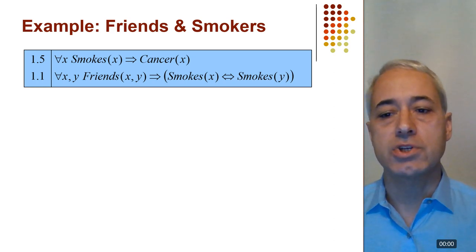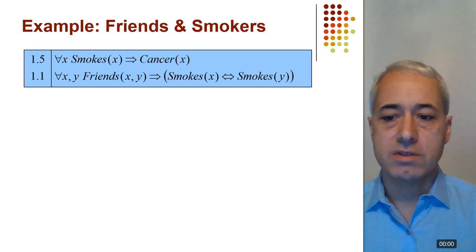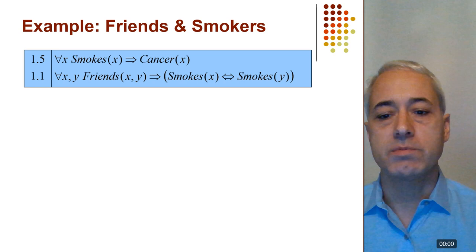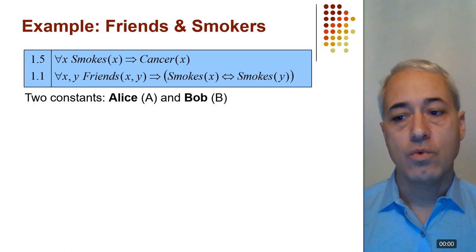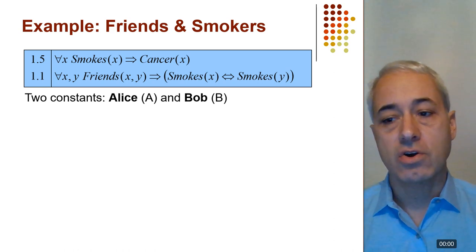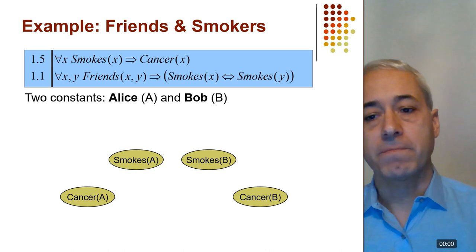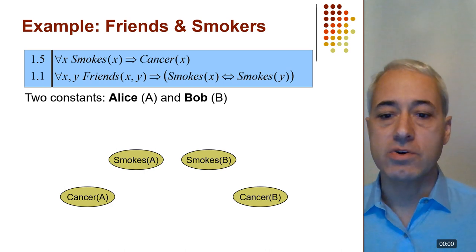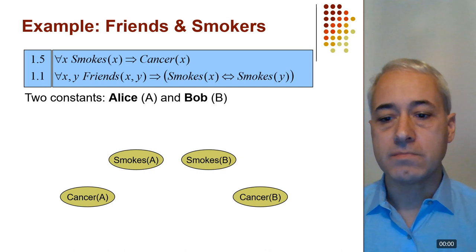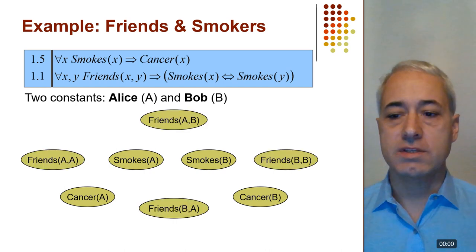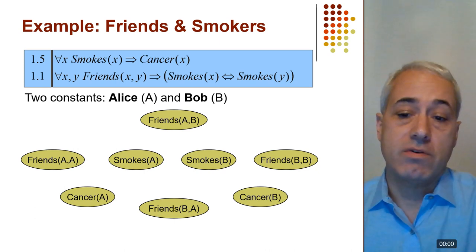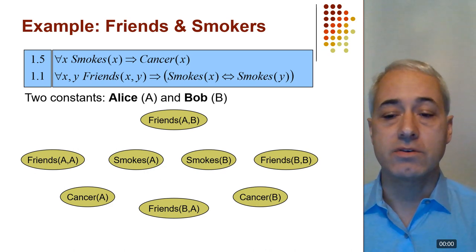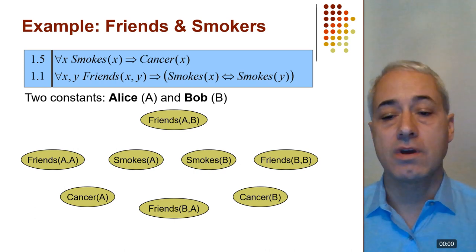What does the MLN represent? To get a concrete probability distribution, we combine it with a set of constants. Suppose we have two people, Alice and Bob. We get one grounding of each predicate for each constant — smokes(Anna) is a Boolean variable, true if Anna smokes and false otherwise, and similarly for Bob and for cancer. For the friends predicate with two constants, friends(X,Y) has four groundings: friends(Anna,Bob), friends(Bob,Anna), friends(Anna,Anna), and friends(Bob,Bob), since friendship is not necessarily symmetric.